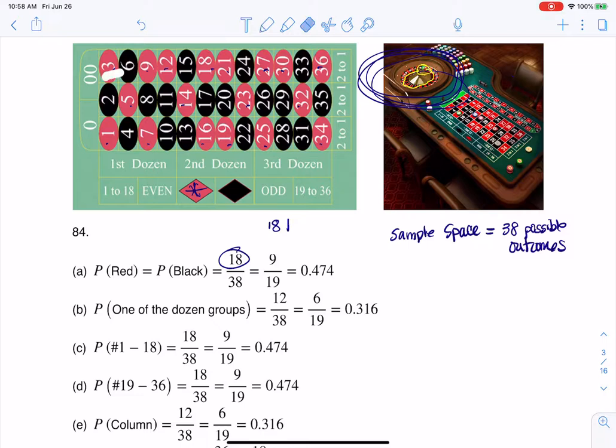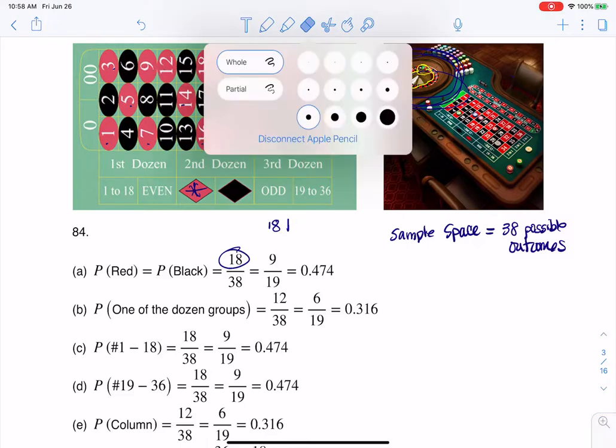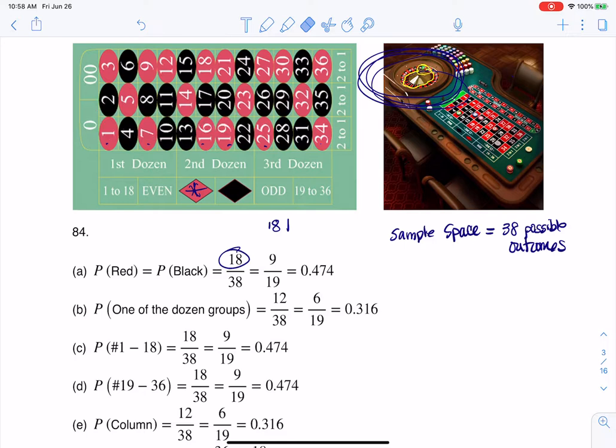Let me erase all this just because there's a bunch in here and I want to clean it up for the rest of the problems. Okay, so let me erase all that. And that's where I'm getting 18 out of 38 or that simplifies to 9 out of 19. But I just went with the decimal.